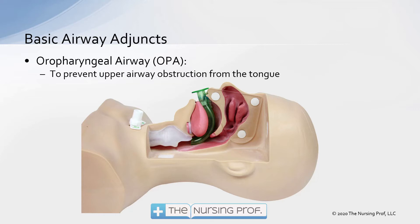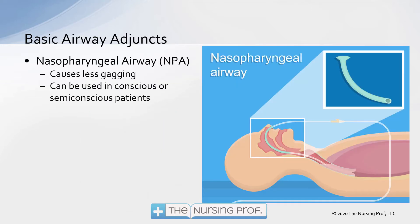Obviously, if we're putting this in somebody who's conscious, it's going to cause a lot of gagging. So this is typically used in patients who are unconscious. If we need to put in an upper airway for a patient who is conscious or semi-conscious, we probably want to move into the nasopharyngeal airway.